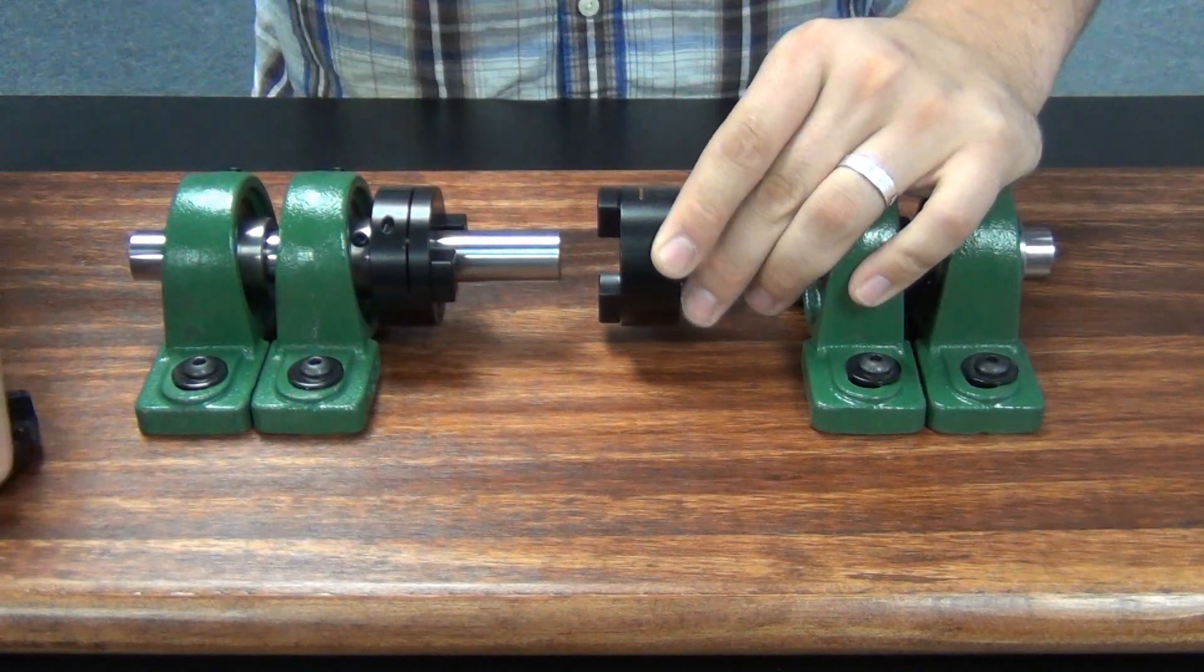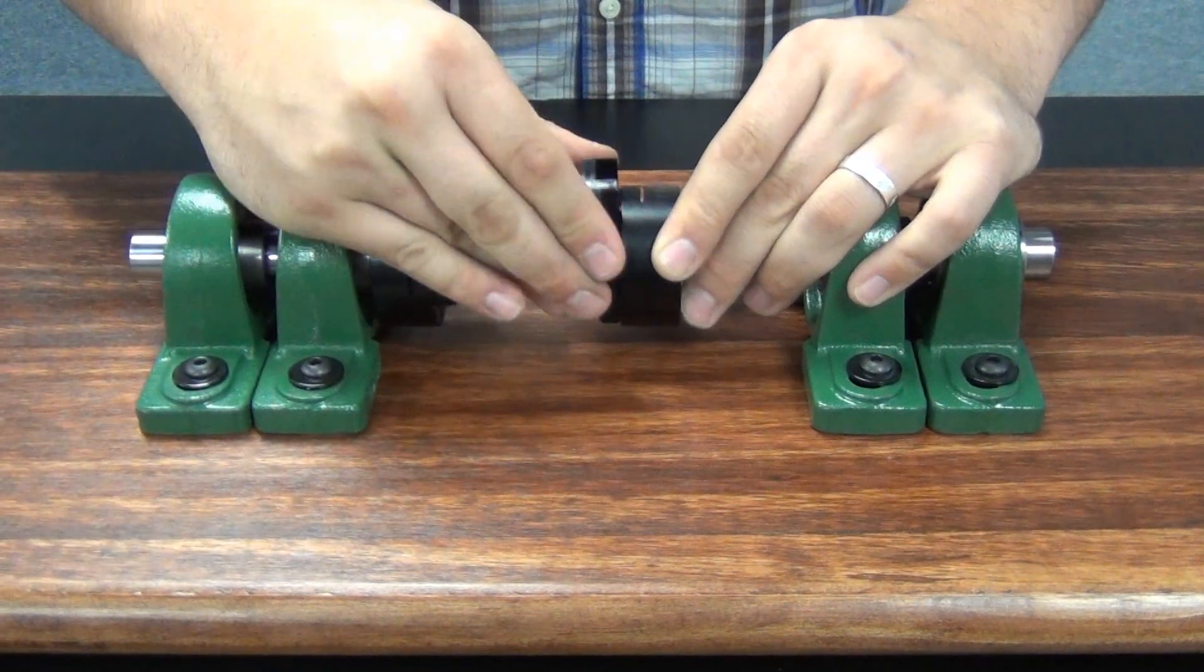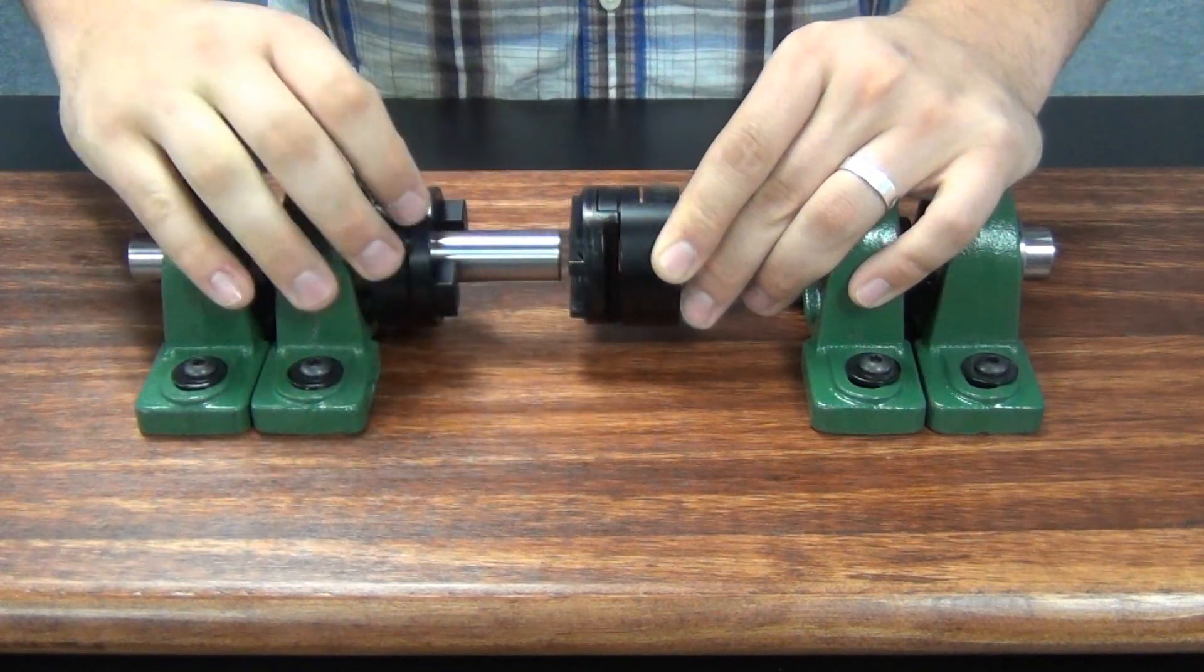Then, place the Oldham disc onto the installed hub by sliding the grooves onto the drive tendons and center the disc by hand.